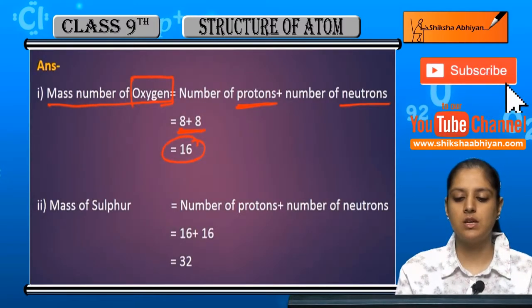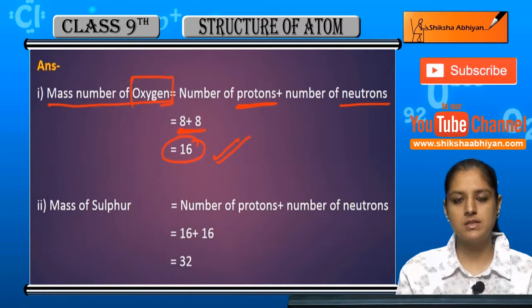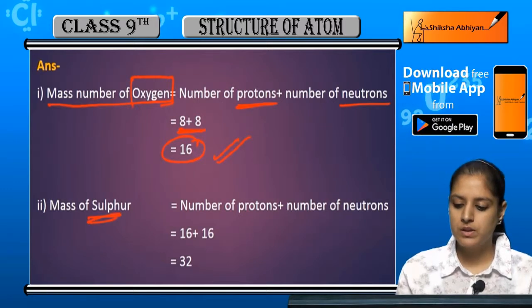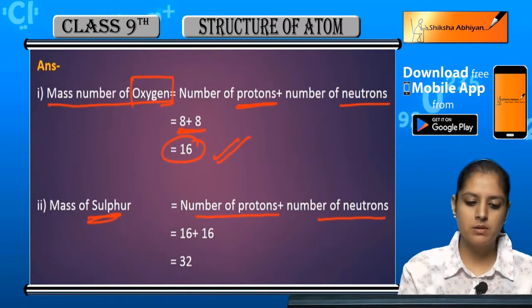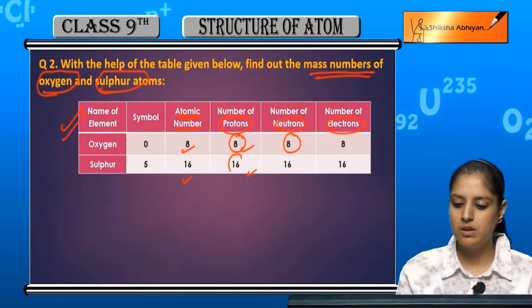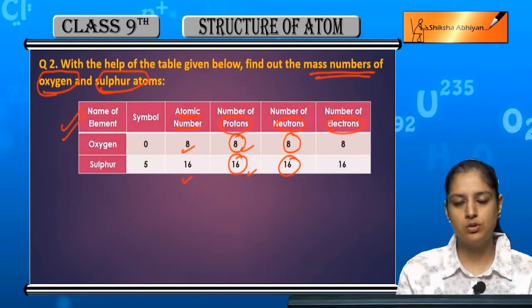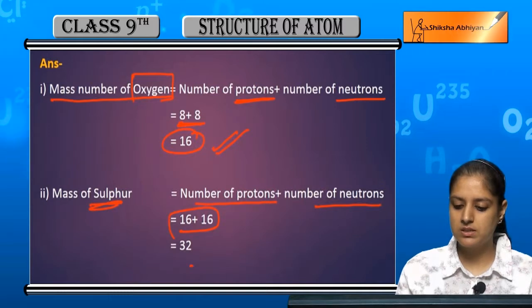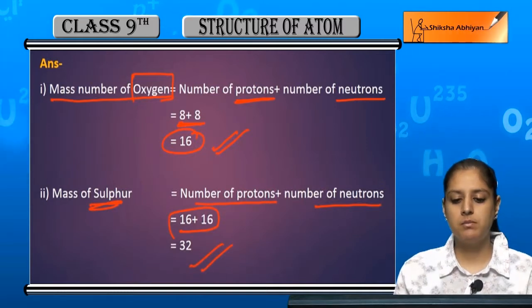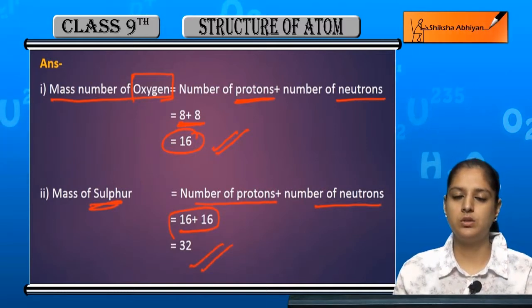Oxygen ka mass number hai 16. Sulfur: number of protons plus number of neutrons. Is case me protons hai 16, neutrons bhi 16, so 16 plus 16, sulfur ka mass number ho gaya 32.